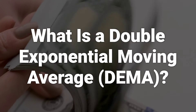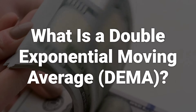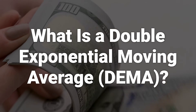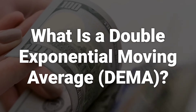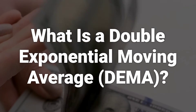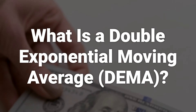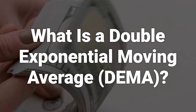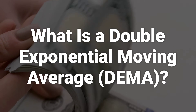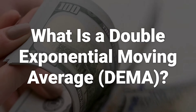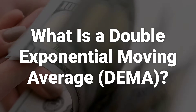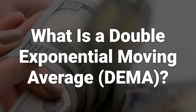Like any moving average, the DEMA is used to indicate the trend in the price of a stock or other asset. By tracking its price over time, the trader can spot an uptrend when the price moves above its average or a downtrend when the price moves below its average.